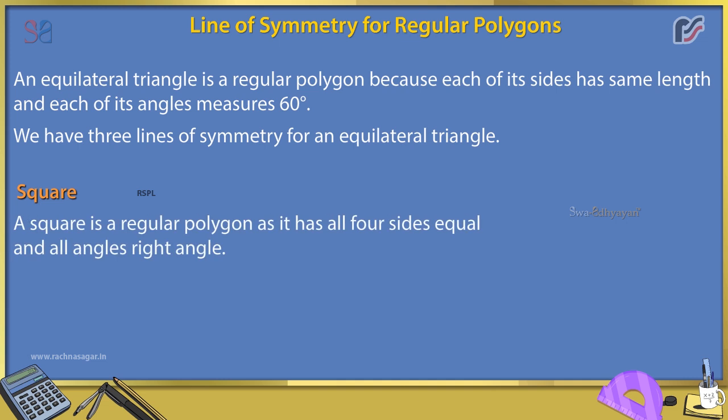Square. A square is a regular polygon as it has all four sides equal and all angles are right angles. We have four lines of symmetry for a square.